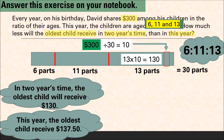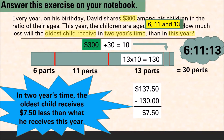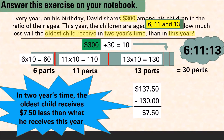In two years' time the oldest child will receive one hundred and thirty dollars. This year the oldest child received one hundred and thirty-seven dollars and fifty cents. Subtracting: one hundred and thirty-seven fifty minus one hundred and thirty gives us seven dollars and fifty cents. So in two years' time the oldest child receives seven dollars and fifty cents less. The middle child will receive eleven lots of ten dollars — one hundred and ten — and the youngest child will receive six lots of ten dollars — sixty dollars.